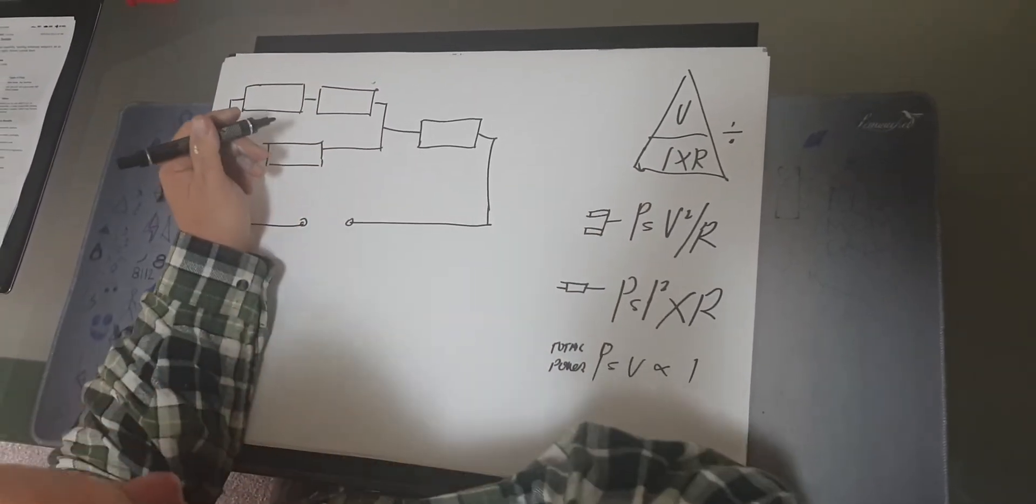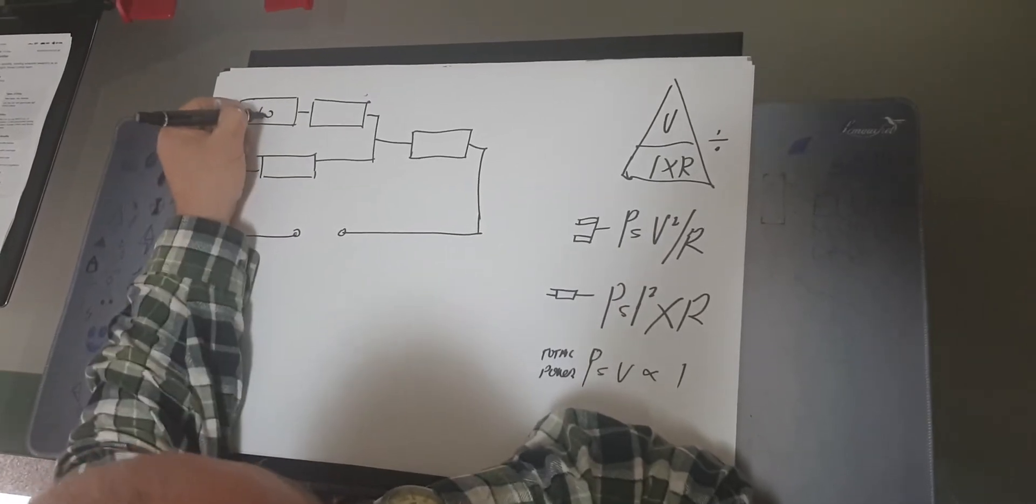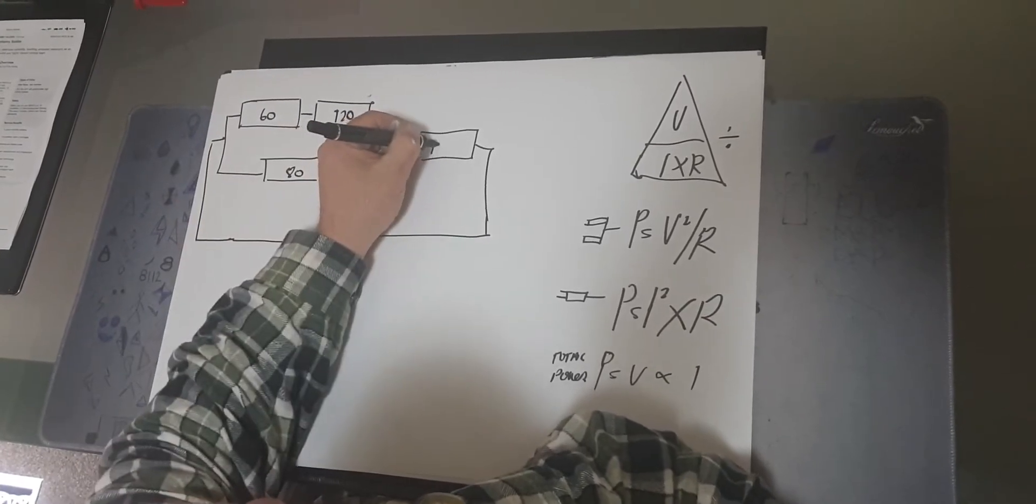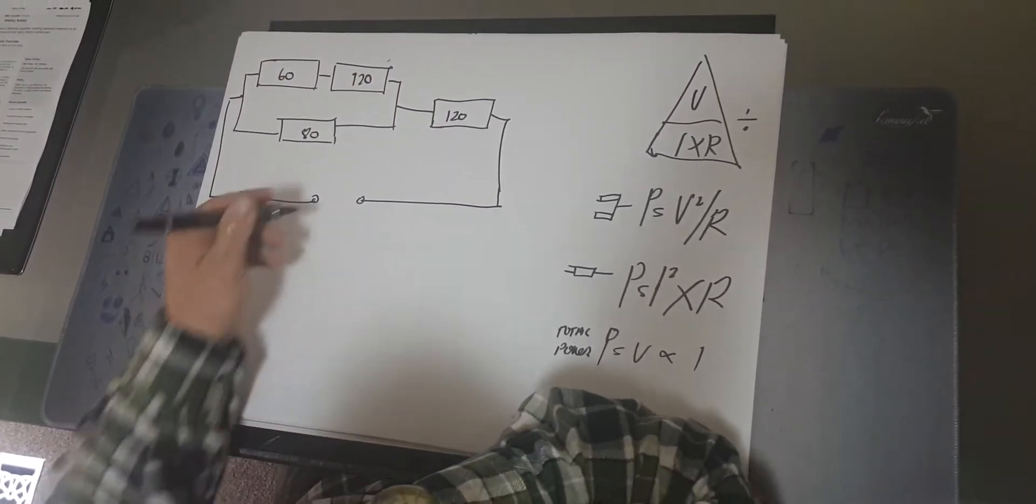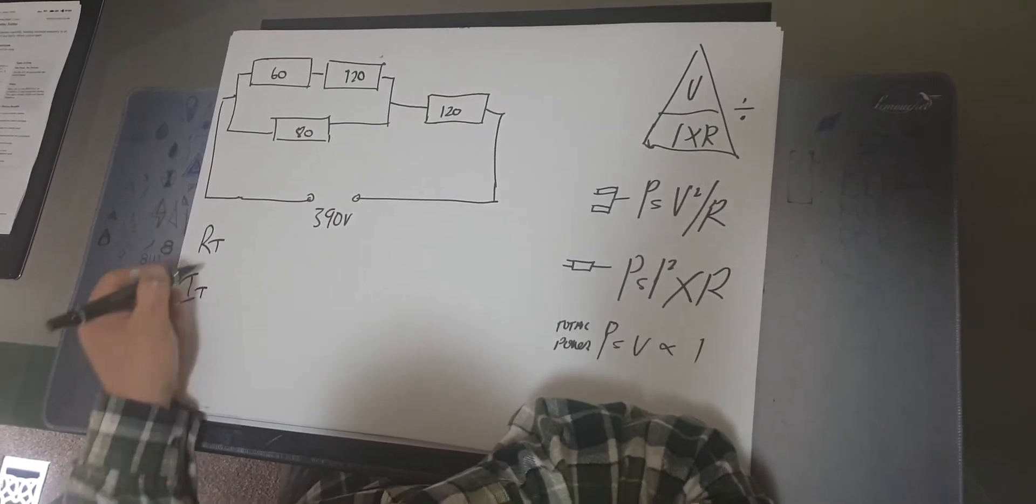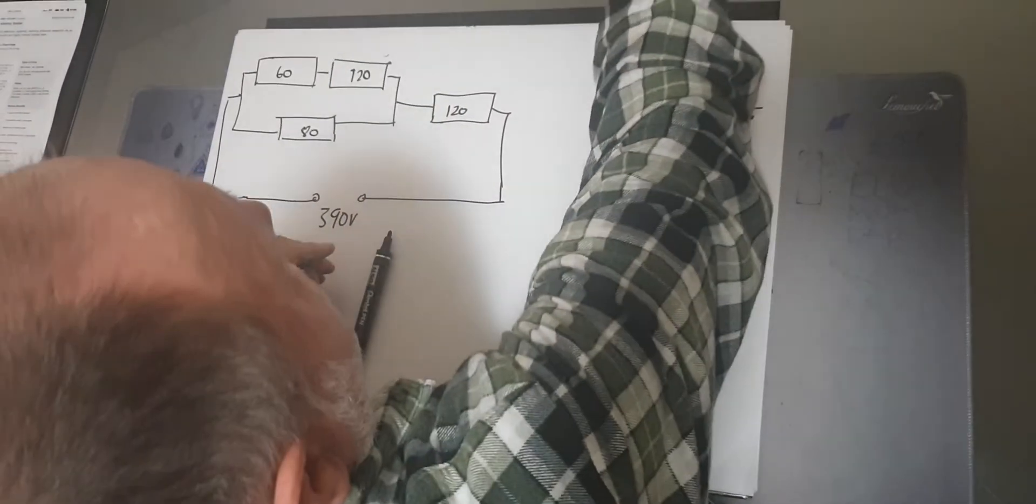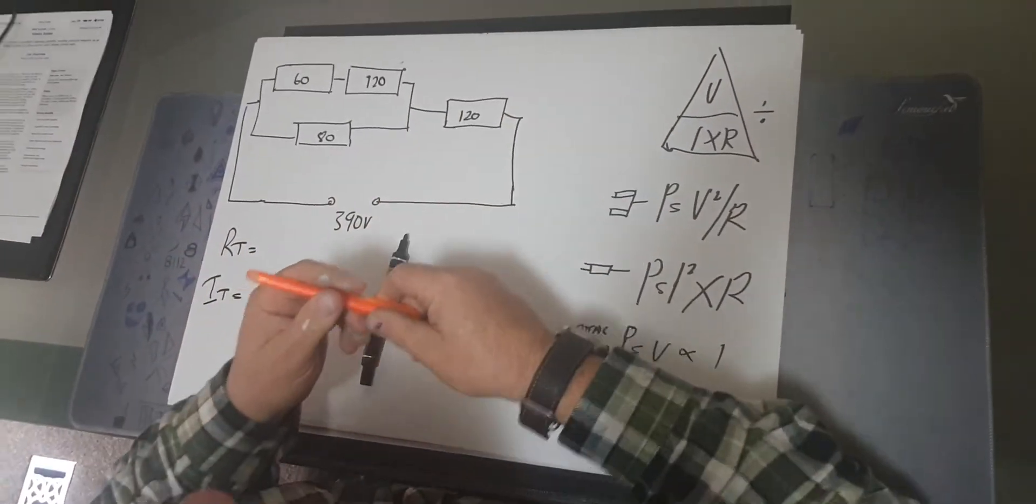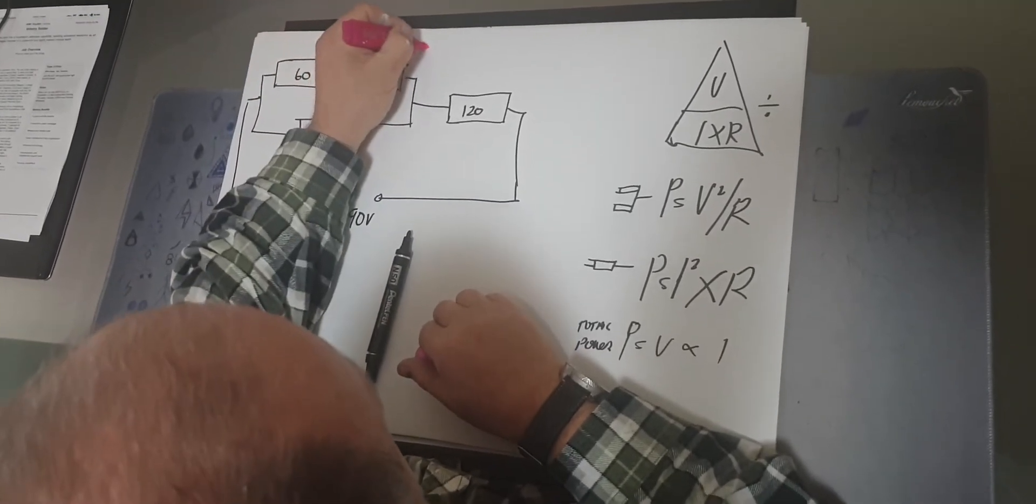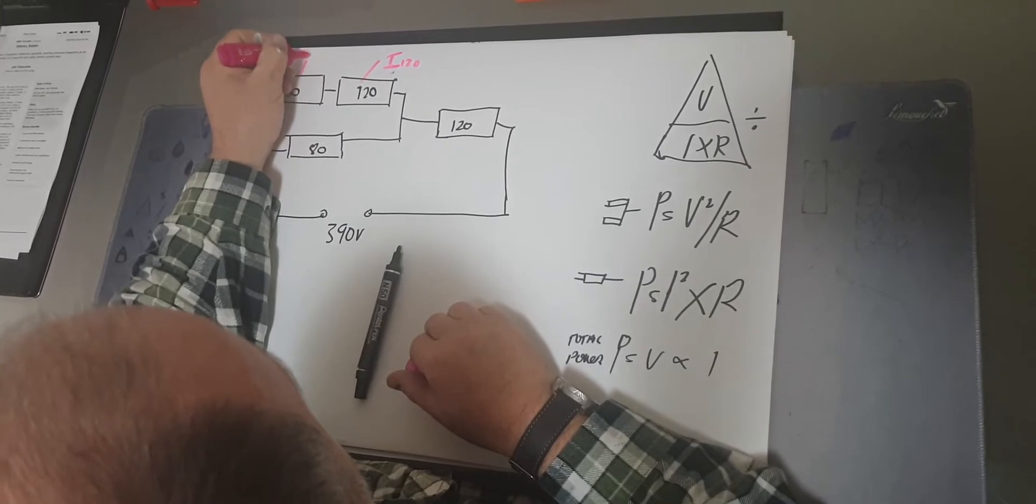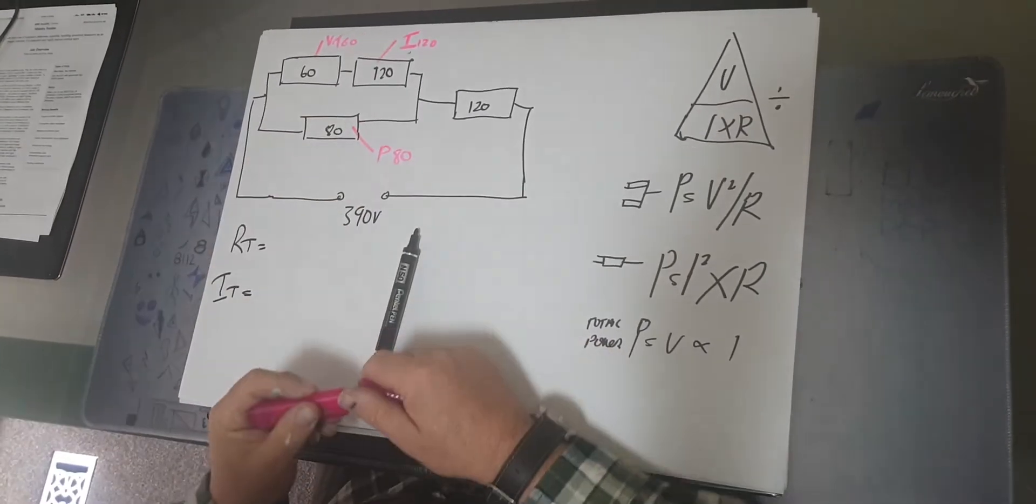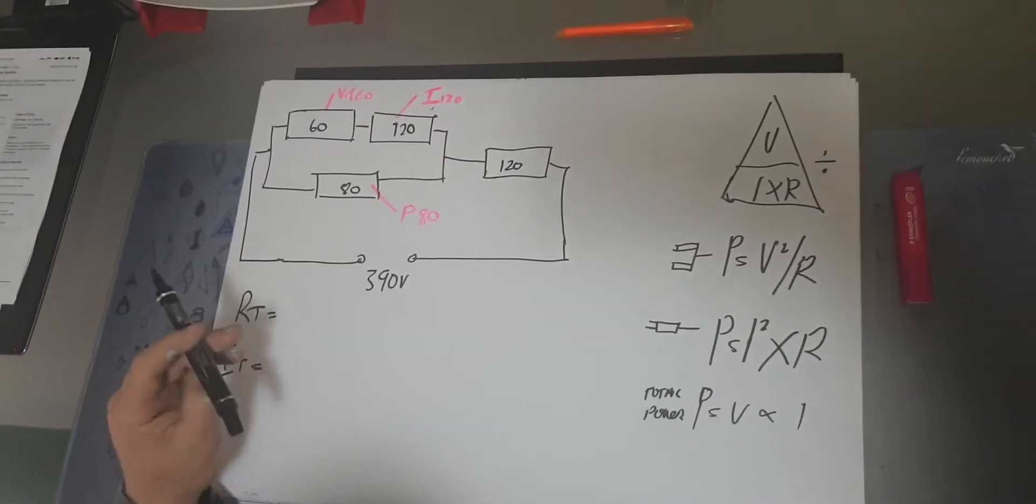So first thing I'm going to do is I've drawn up the circuit of a series-parallel circuit. The first thing we need to do is like I said, I always break it down to get these two items. We're going to find the current of the 120, the voltage drop of 60, and the power of 80. Probably three of the harder ones - this is probably the hardest you can get to break down.